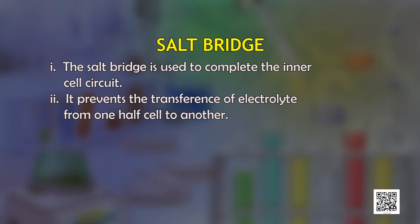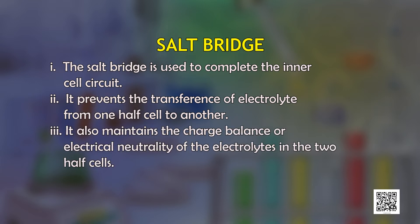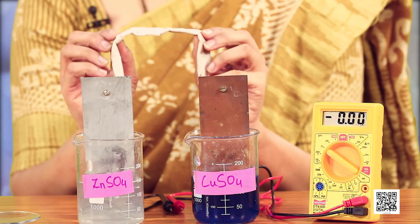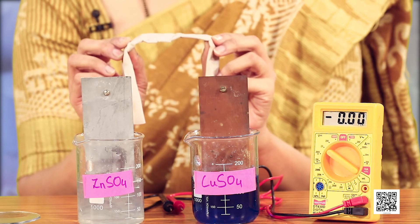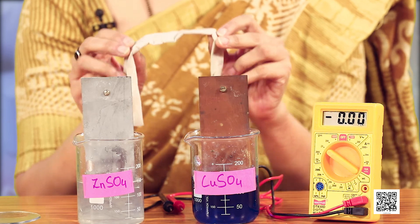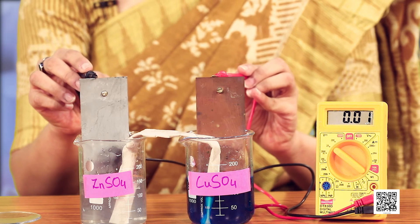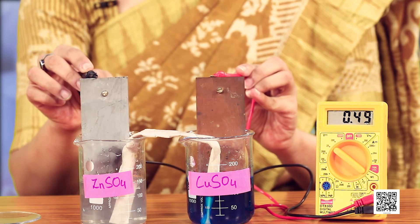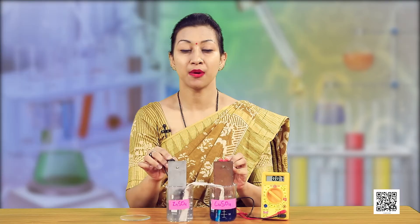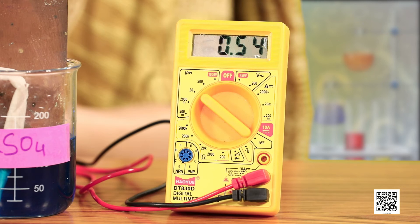The salt bridge also prevents the transference of electrolyte from one half cell to another and maintains the charge balance or electrical neutrality of the electrolytes in the two half cells. This salt bridge is made from a filter paper dipped in a saturated solution of potassium chloride. As soon as we insert it as a bridge into the two containers and connect the copper plates through the multimeter, the readings start to appear, reaching up to 1.1 volts — the EMF of this galvanic cell.